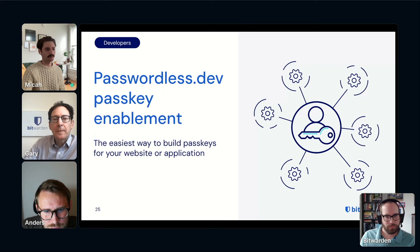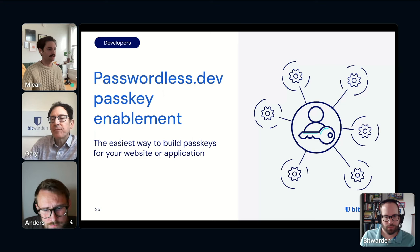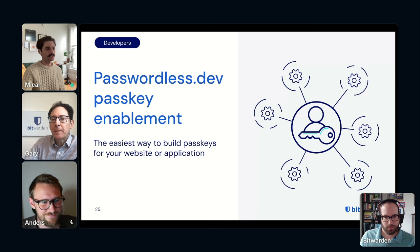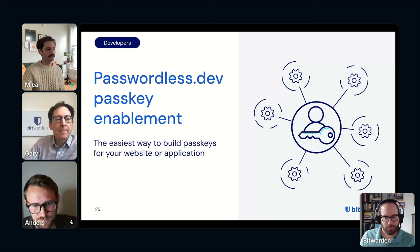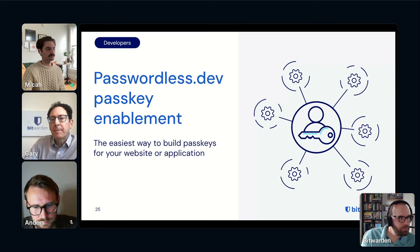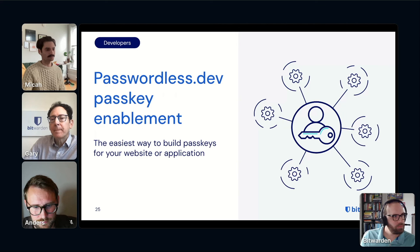With a PRF-capable passkey, what essentially happens is each passkey is used to encrypt the user's encryption key. When the server sends down the encrypted key, the passkey can decrypt it and then use that to decrypt the vault — maintaining zero knowledge in this way.